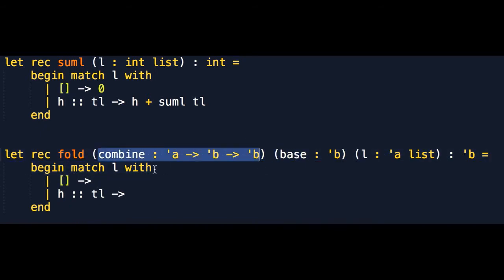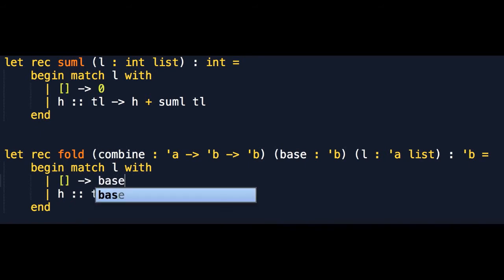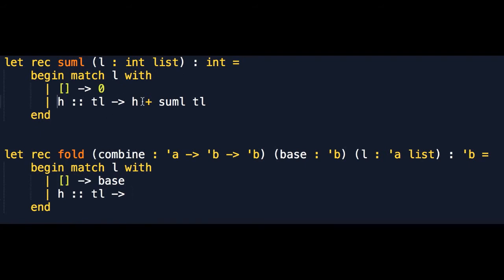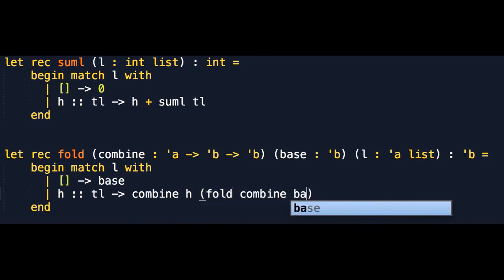So we're trying to rewrite suml using fold. Fold is given a combine function of type 'a -> 'b -> 'b, a base of type 'b, and L as a 'a list. We match against L. In the case where L is empty, we return the base — just like suml returns zero when the list is empty. If the list is head cons tail, we want to combine the element we're on with the recursive result of calling the function on the rest of the list. That's the same structure as suml. This is why fold is structured this way.